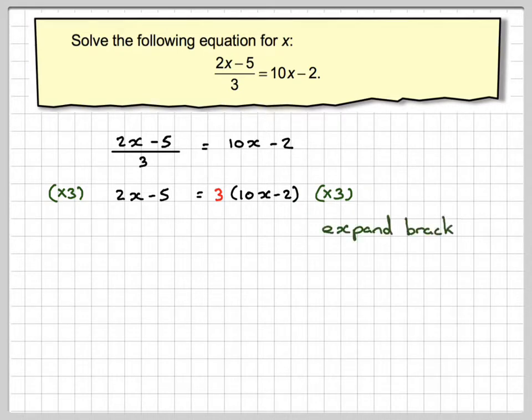Now to expand the brackets, so this side there's no brackets, we'll just write 2x minus 5. And then we need to do 3 times 10x, which gives me 30x, and then 3 times minus 2, which gives me minus 6.